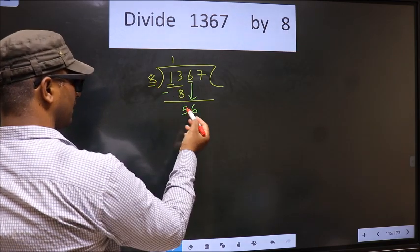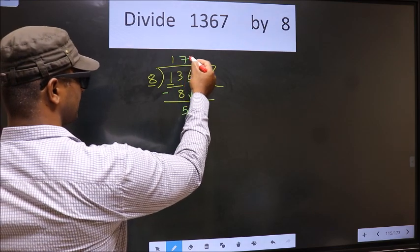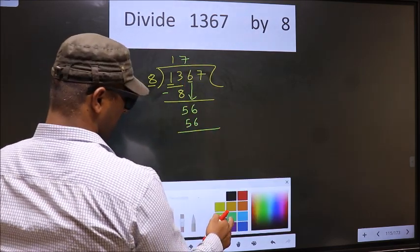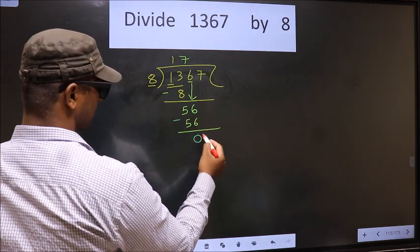So 56, 8 here. When do we get 56 in 8 table? 8 sevens, 56. Now you subtract. 56 minus 56, 0.